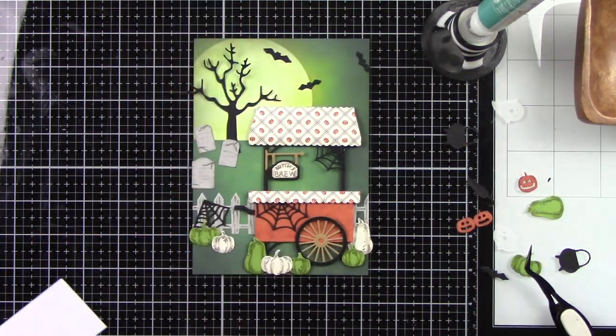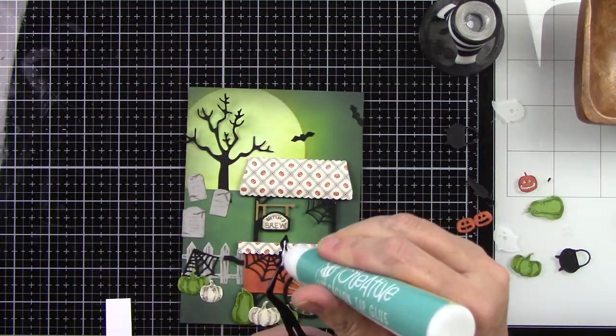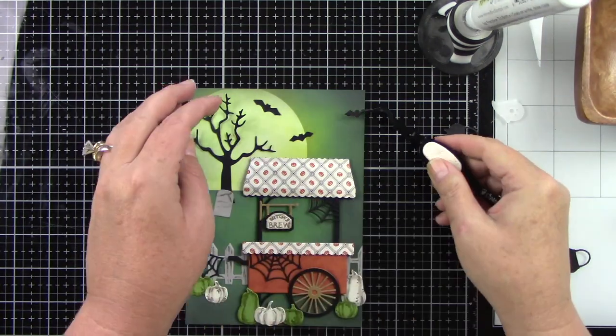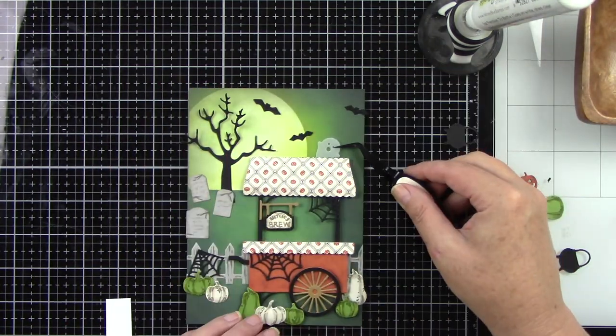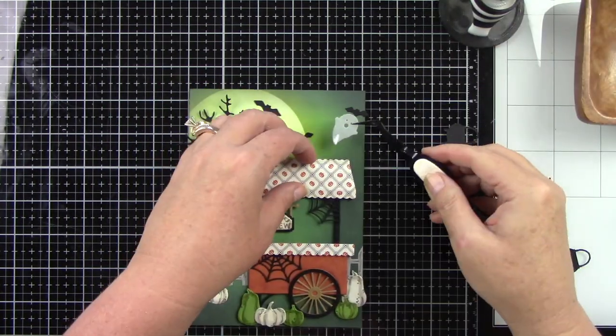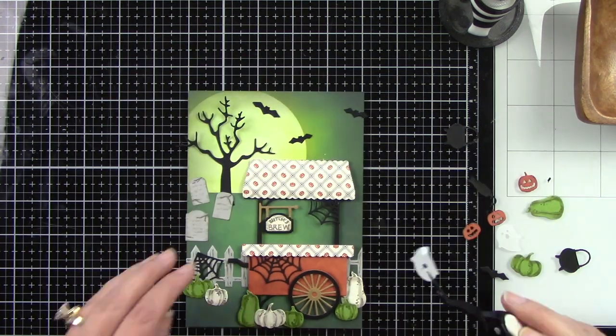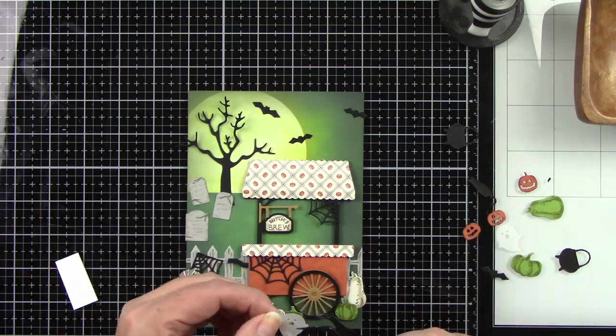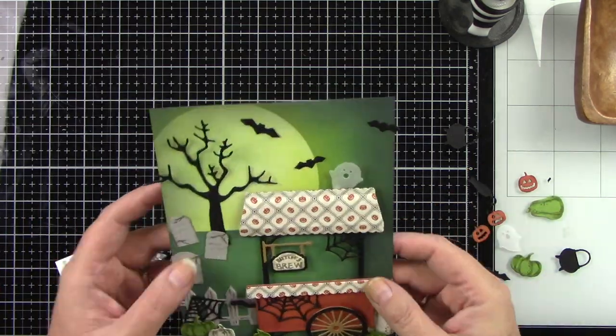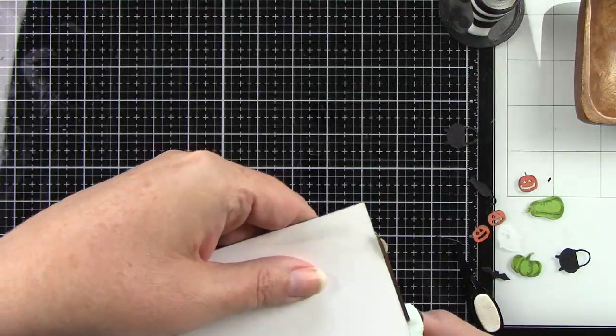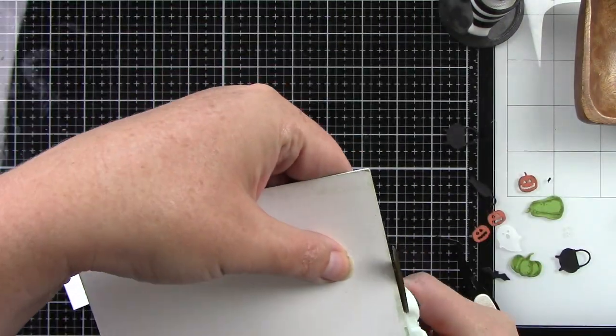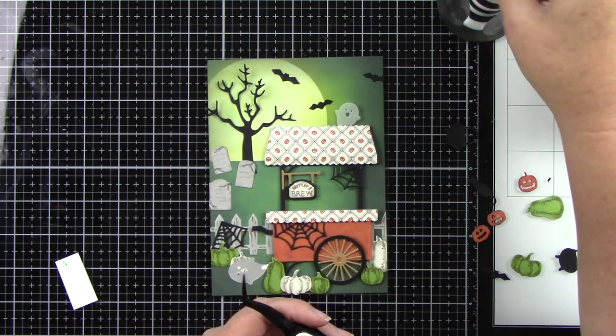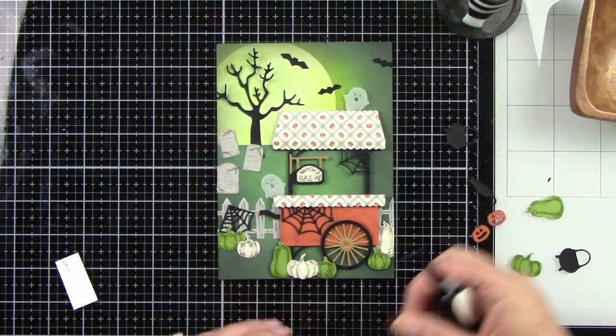And we have that cute cat. We've got a jack-o'-lantern left. We have the witch's cauldron. I don't know why I've been calling it a kettle. And my little ghost that we die cut from vellum. I die cut those from vellum because I want them to be see-through. So it's perfect. I'm adding a little piece of foam tape on the bottom of him and just tucked him behind that cart so you won't even see it. And then the other one's going to just be tucked in behind or on the side of the cart. So just hide your adhesive when you're using vellum.